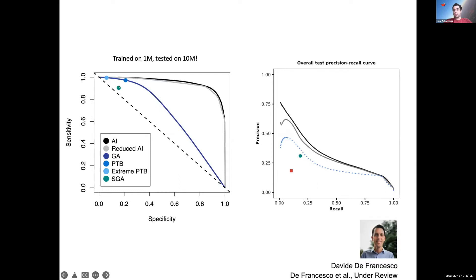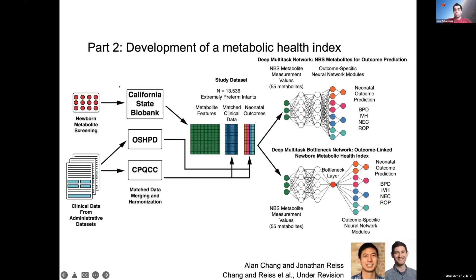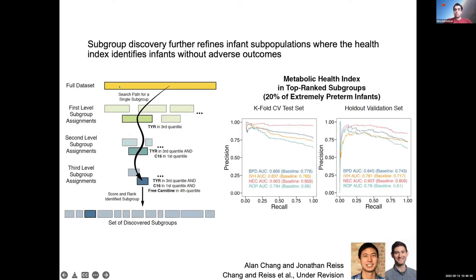However, looking at precision and recall, while better than gestational age, the model was not anywhere near good enough for a precision medicine approach. The next step was to add biology — we used metabolomics from dry blood spots measured in 13,000 extremely preterm infants, linked to the earlier dataset. Adding biology to the same multitask neural network pipeline solved the precision-recall problem, giving us pretty good precision and recall for both holdout validation and cross-validation.